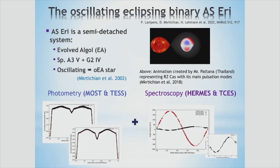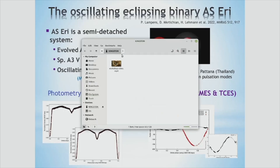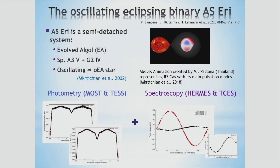It is a semi-detached system at a very short orbital period and it has an early-type primary showing short period oscillations. It is also mass-accreting; it's at the end of the rapid mass transfer stage of an evolved system of Algol type.